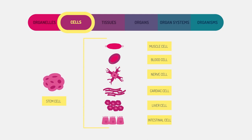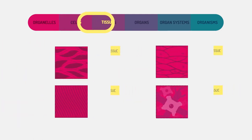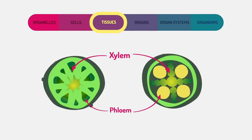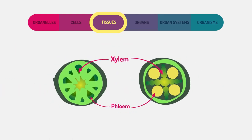Groups of cells then form together to form tissues. In humans we have four main types of tissue. In plants, the xylem and phloem are examples of plant tissues.